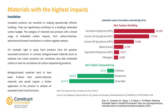Next, we look at insulation. Insulation products are essential to create operationally efficient buildings, but can significantly contribute to a building's embodied carbon budget. This category of materials has products with a broad range of embodied carbon impacts — from carbon-intensive petrochemical-based contributors to carbon-negative options. Rigid or spray foam products like XPS, HFC, HFO and EPS have the greatest associated emissions. In contrast, biological-based materials such as cellulose, hempcrete and straw bales can contribute with very little embodied carbon or even be considered net zero sequestering products.